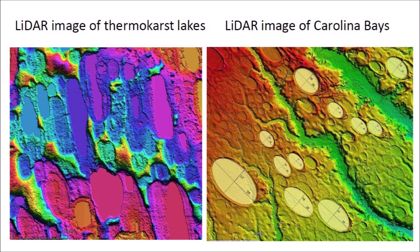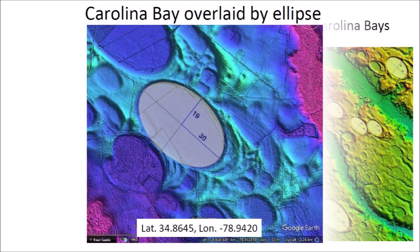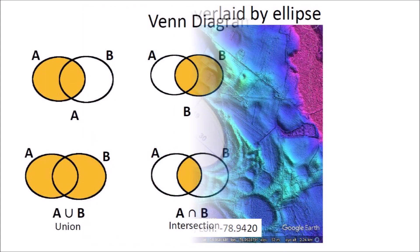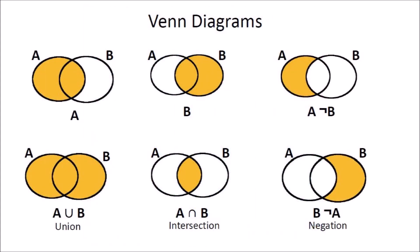The Carolina Bays can be fitted with ellipses to demonstrate that these geological features have indeed elliptical geometry. The most reasonable explanation is that the Carolina Bays are conic sections because they originated as inclined conical cavities. A LiDAR image overlaid by an ellipse can be evaluated for congruency — the evaluation is easier if the ellipse is only 50% opaque and slightly smaller than the Carolina Bay so that the rim of the bay can be seen clearly. Venn diagrams illustrate set relationships in logic and can be used for fitting ellipses to geological structures like the Carolina Bays and the thermokarst lakes in Alaska.